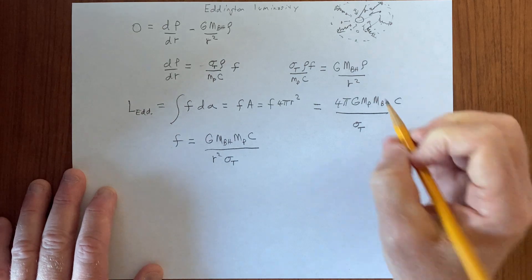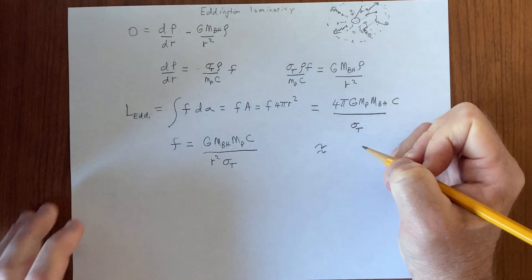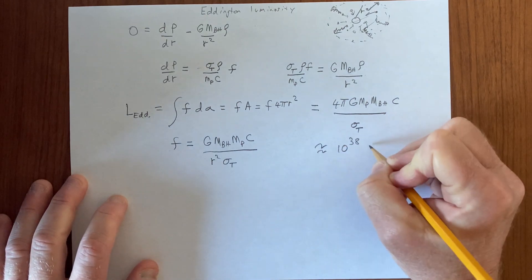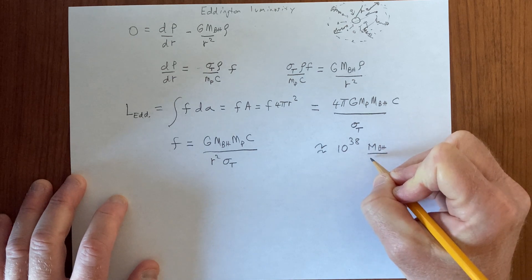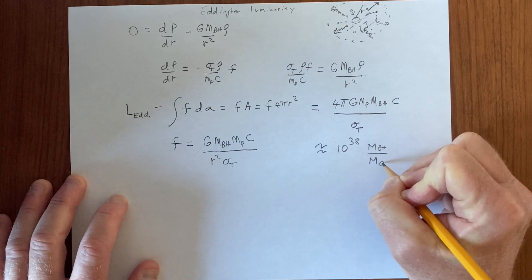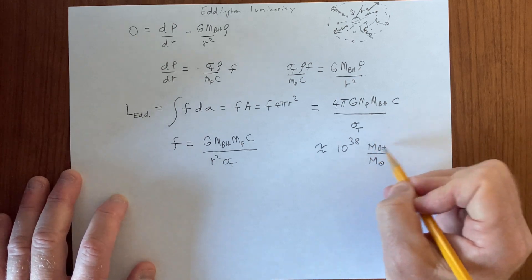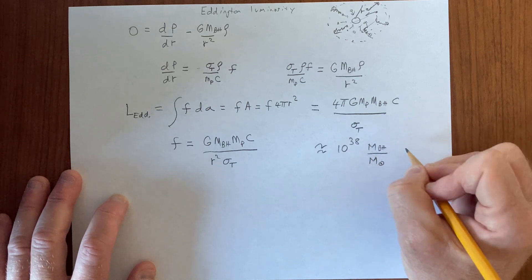If we evaluate these constants, we are about 10 to the 38, the mass of the black hole divided by one solar mass. The Eddington luminosity for a black hole that is the mass of the sun is 10 to the 38, and this is ergs per second.